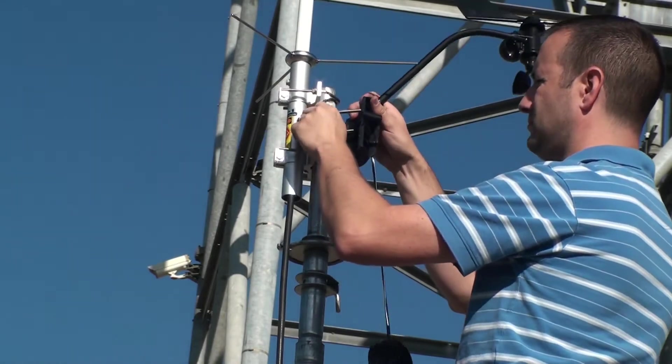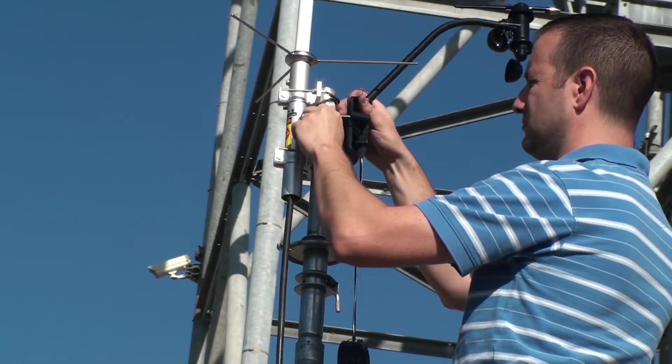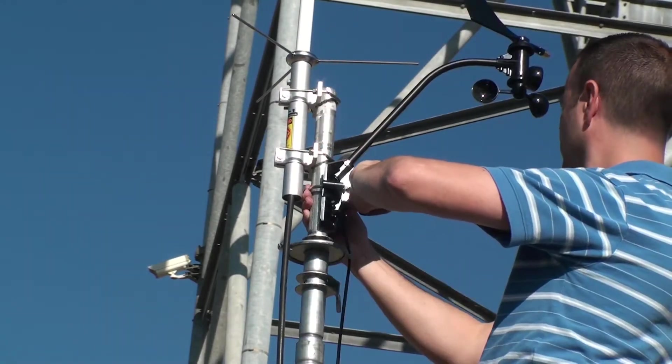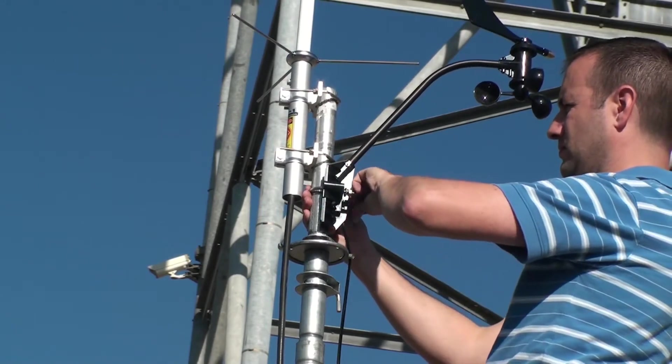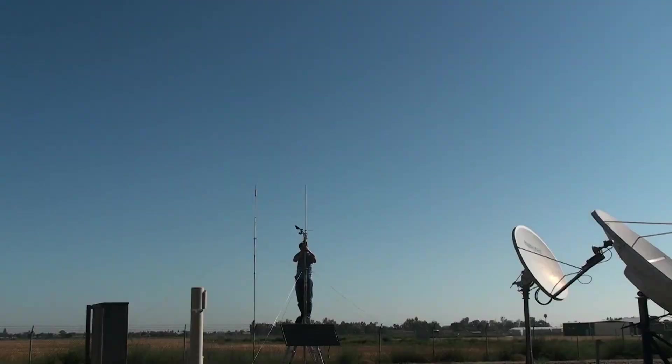While we're here, let's install the anemometer that comes with the Davis Vantage Pro 2 weather station using the supplied U-bolt. Now that we're done with the top of the mast, let's raise it to full height. While raising the mast, you may want to apply some UV resistant zip ties to hold the antenna coax and the anemometer cable firmly in place.